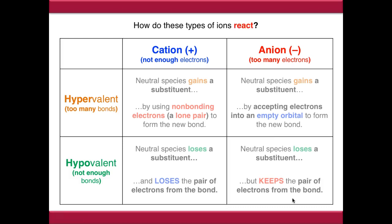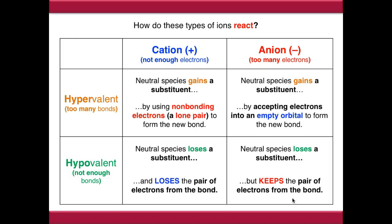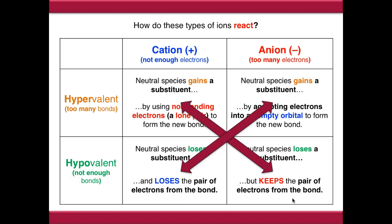So we've discussed how these types of ions form, but how do they react? How do we neutralize them? If we look at our statements about gaining and losing substituents and keeping and losing electrons, all we can do is swap these two over - and that's how we basically neutralize our ions.